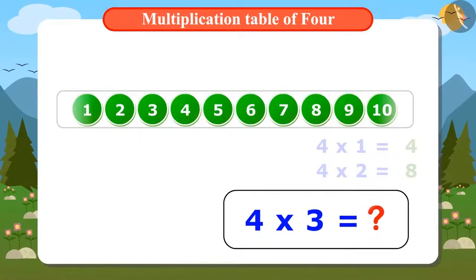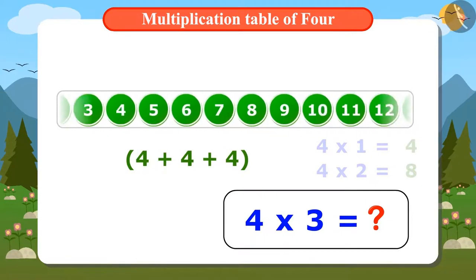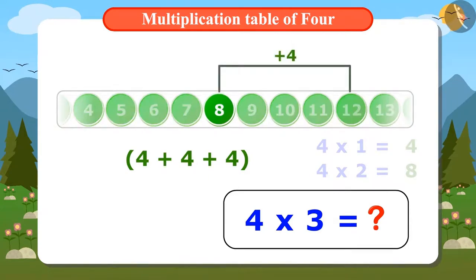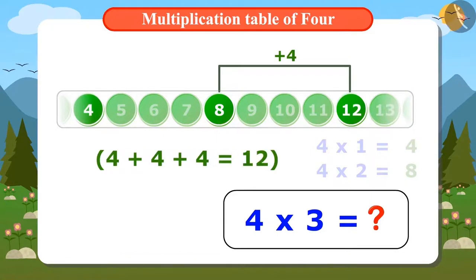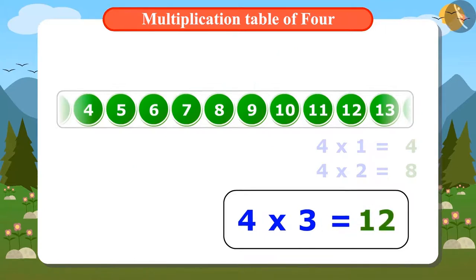To find the answer for 3 times 4, either add 4 three times or find the 4th number after 8. The 4th number after 8 is 12. And if we add 4 three times, then also the answer is 12. This means 4 threes are 12.